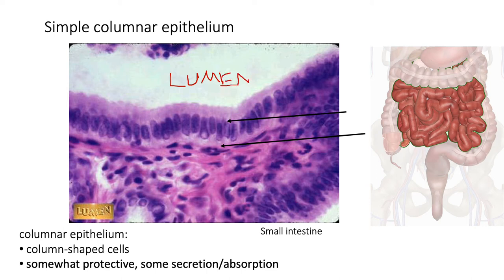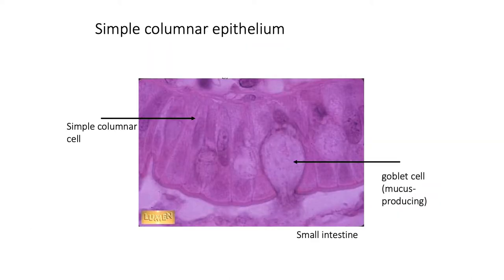Looking at the lumen of the small intestine in this histology slide, we can see these columnar cells of simple columnar epithelium arranged in a single layer. The dark staining areas are the nuclei of individual cells, packed shoulder to shoulder. This arrangement allows for secretion and absorption — getting nutrients out of the lumen and into the blood. The small intestine also has goblet cells that produce mucus, dumping it into the lumen to add a protective covering for contents moving through.